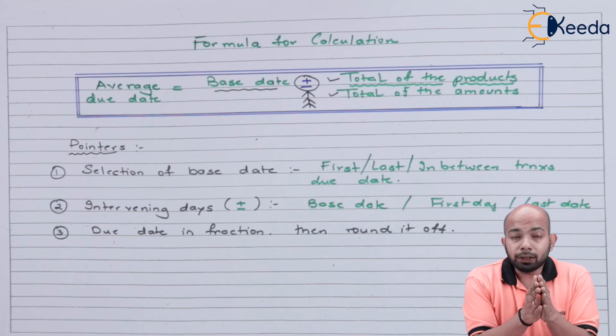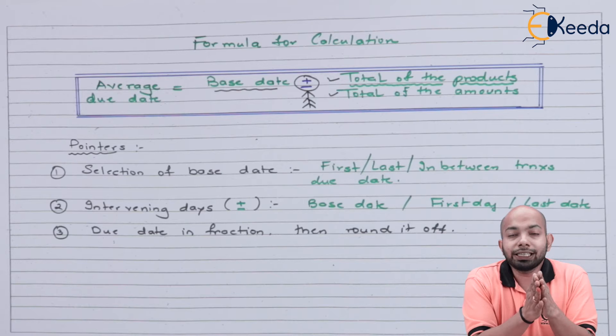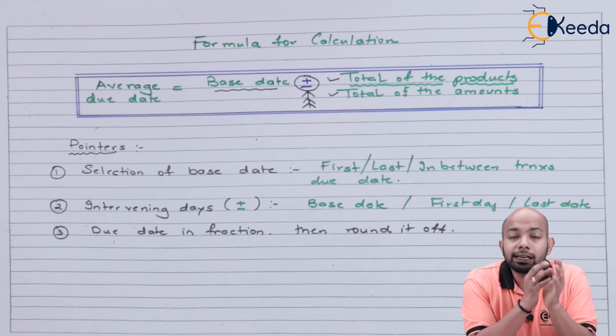The formula has a numerator and denominator, so you might have a due date in fraction. If that's the case, round it off.